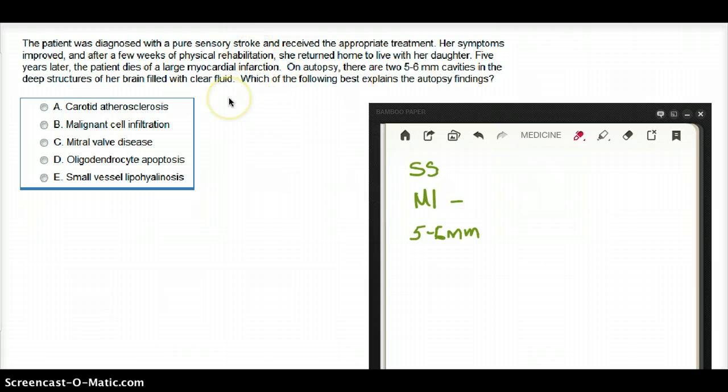I could assume she had hypertension or diabetes or something, right? But what they did tell us is that she had two cavities filled with clear fluid of 5-6mm in the deep structures of the brain.